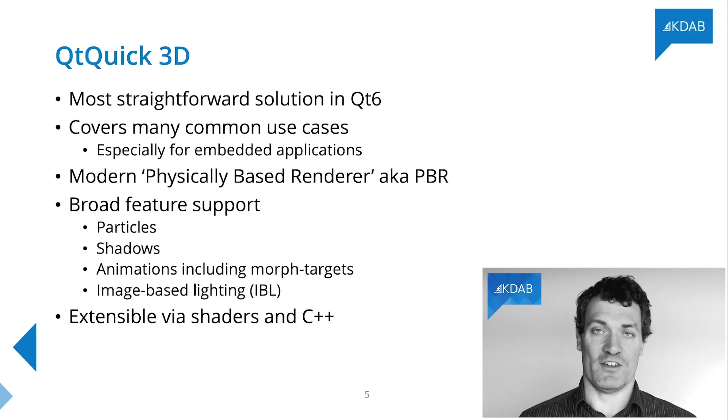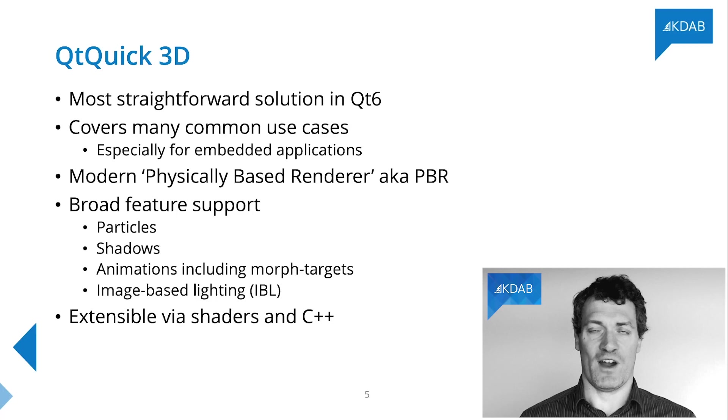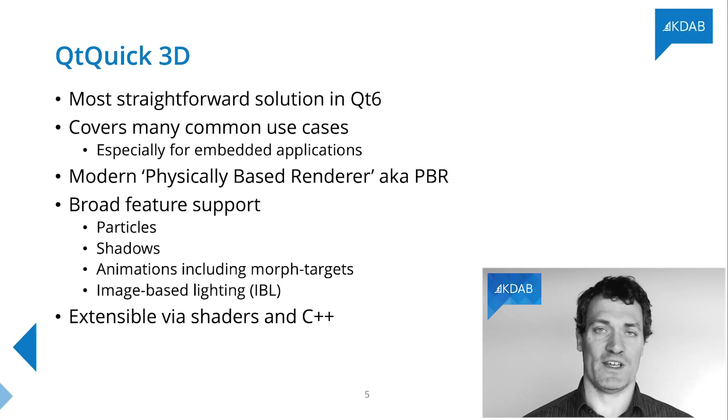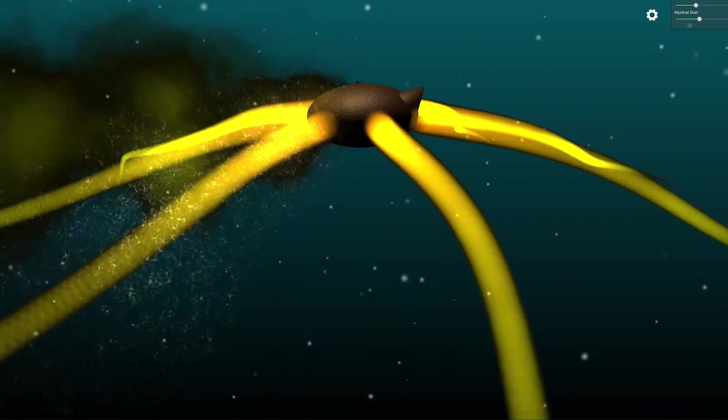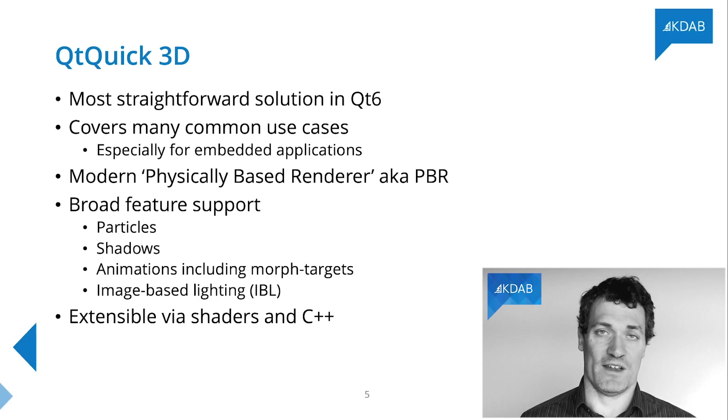Qt Quick 3D supports loading GLTF2 assets and a rather complete range of the features GLTF2 can contain, which means animations, including skinning animations, particles, image-based lighting, reflections, and more. Like Qt Quick, Qt Quick 3D is extensible via some C++ APIs to define custom types of meshes, instancing, and some other pieces, but it doesn't have a complete C++ API the way some other technologies do.